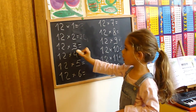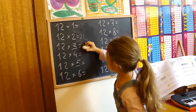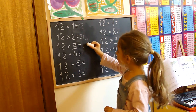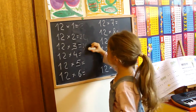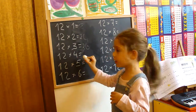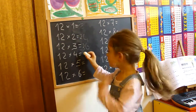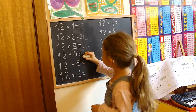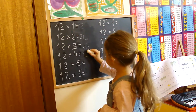Twelve times three, thirty-six. Twelve times four, forty-eight.